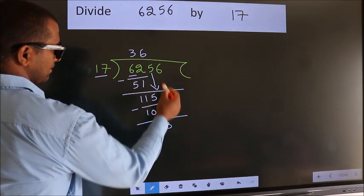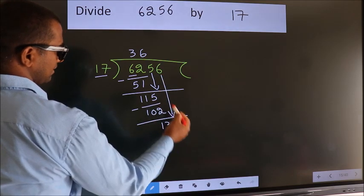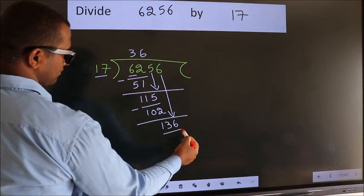After this, bring down the beside number, so 6 down. So 136.